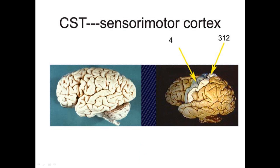The corticospinal tract originates in cells in Brodmann's area IV of the motor cortex. This is the central sulcus. We call this the precentral gyrus. Behind the central sulcus, we call this the postcentral gyrus, area 3-1-2, which receives sensory input. Area IV sends out motor information, and thus it's the origin of the corticospinal tract.